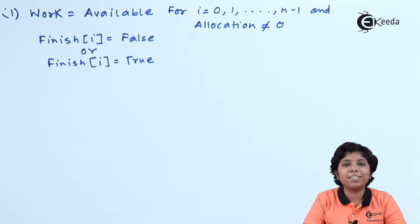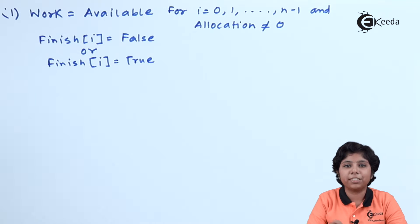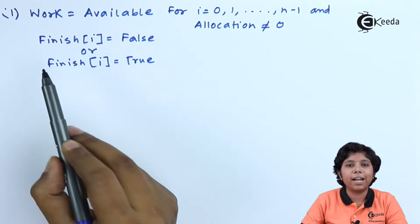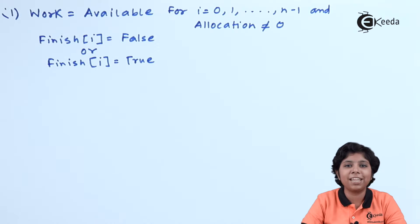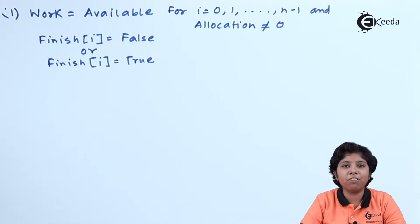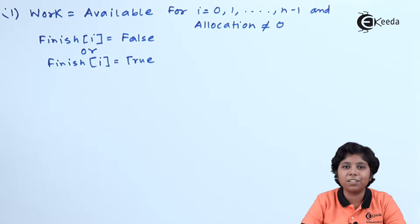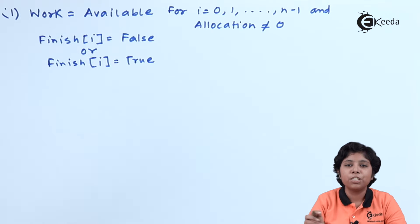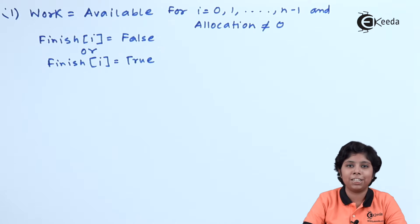Here we can see a difference: if the allocation is not equal to zero, we initialize finish[i] to false. But if allocation equals zero, that means the process has not been allocated any resources, meaning the process is not executing in the system. So we set finish[i] = true as the initialization for such processes.